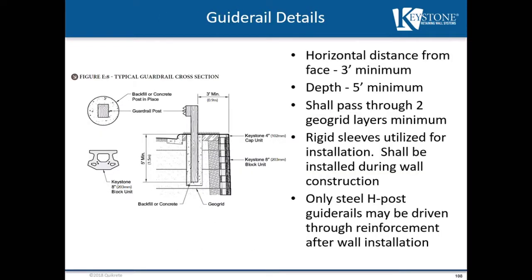Finally, we have guide rail details. Guide rails are probably the most economical option for vehicular barrier systems. These are governed by AASHTO design codes, which state they must be a minimum of three feet from the wall face and a minimum five feet deep into the ground. Typically these are also done with sleeves — the sleeve must pass through a minimum of two geogrid layers and be installed during wall construction. Your guide rail contractor can then come back and concrete the posts in place. You can do this without a sleeve if you're using steel H-post guide rails, as they can be driven directly through the reinforcement without dragging it down. You should never auger these systems in place, as that tears up those upper geogrid layers. The preferred methods are utilizing a sleeve or driving a post in.